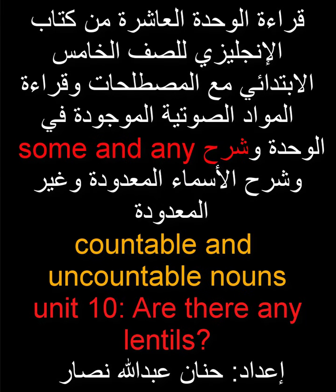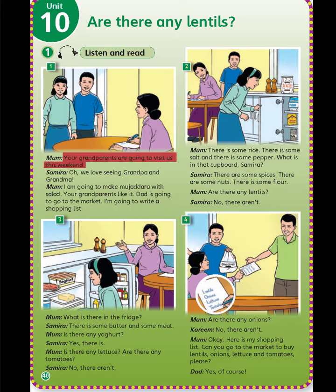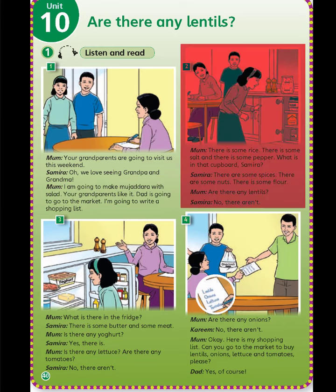Grade 5, Unit 10: Are there any lentils? Listen and read. One. Mom: Your grandparents are going to visit us this weekend, Samira. Samira: Oh, we love seeing grandpa and grandma! Mom: I am going to make mujaddara with salad — your grandparents like it. Dad is going to go to the market. I am going to write a shopping list.